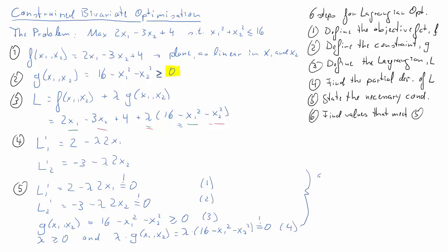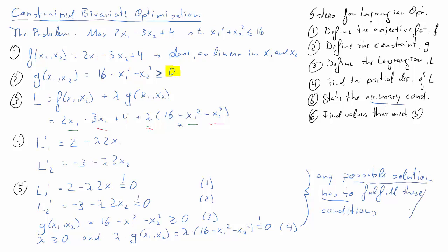These are necessary conditions because any possible maximum — any possible combination of x₁ and x₂ that wants to be a maximum — has to meet all of these conditions. If any combination of x₁ and x₂ breaches any of these conditions, it cannot be a constrained maximum.